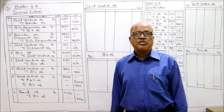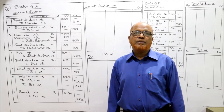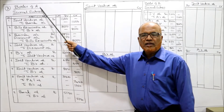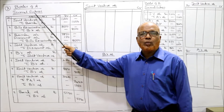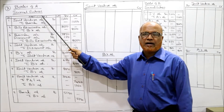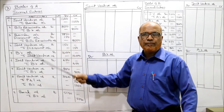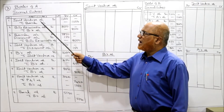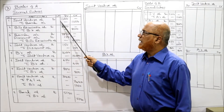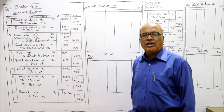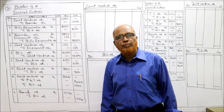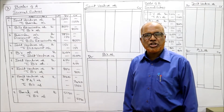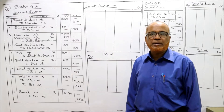In the books of A, the first entry will be: Joint Venture Account Dr. to Bank - because A is paying the money - 11,000. This 11,000 includes 10,000 rupees worth of timber and 1,000 rupees expenses, being the timber purchased and expenses paid by Mr. A.